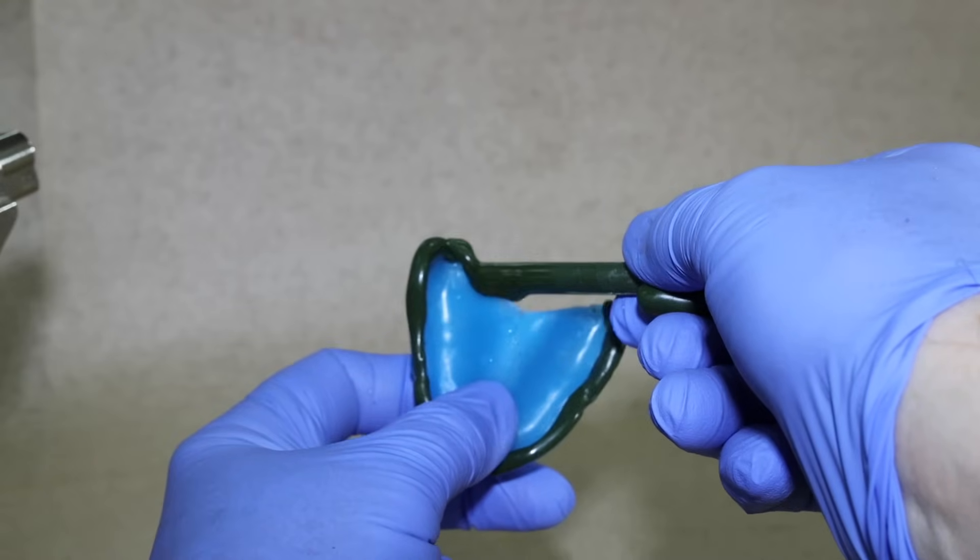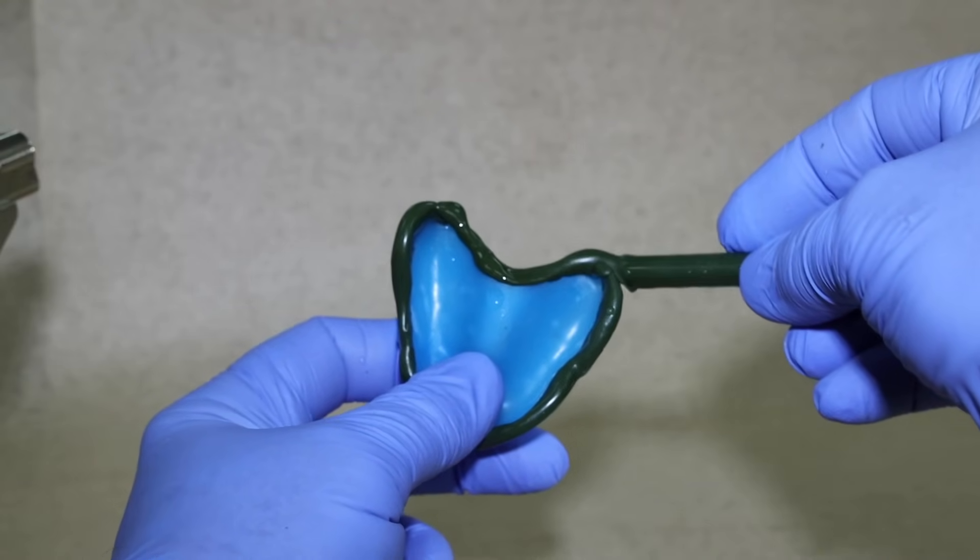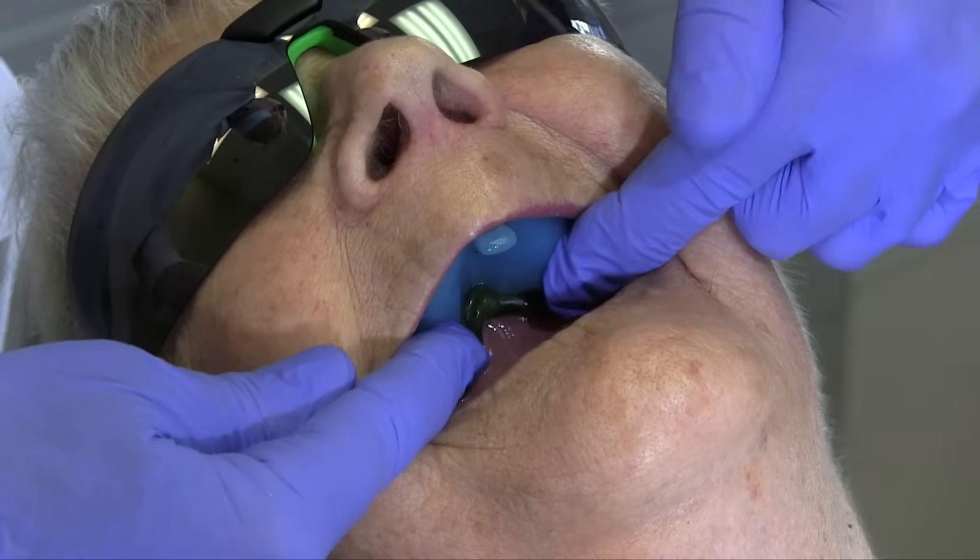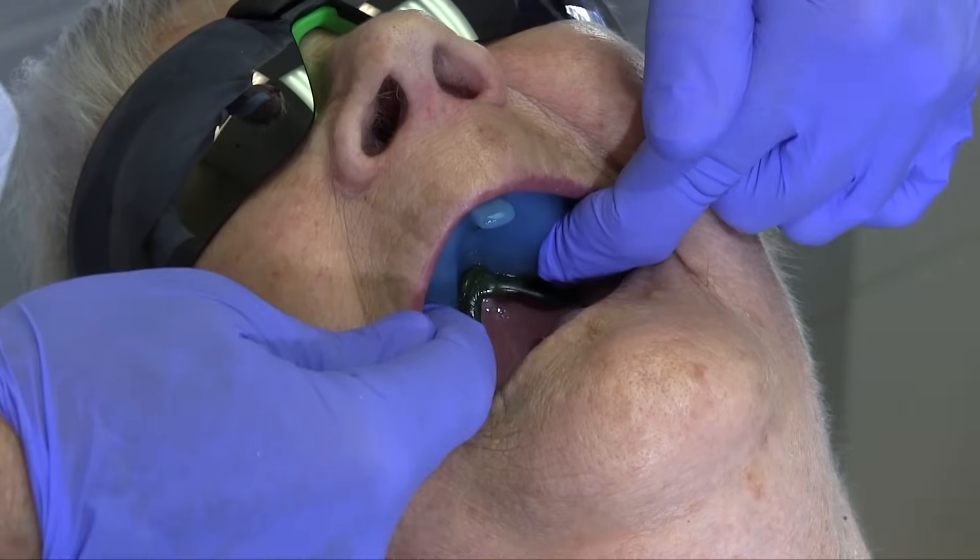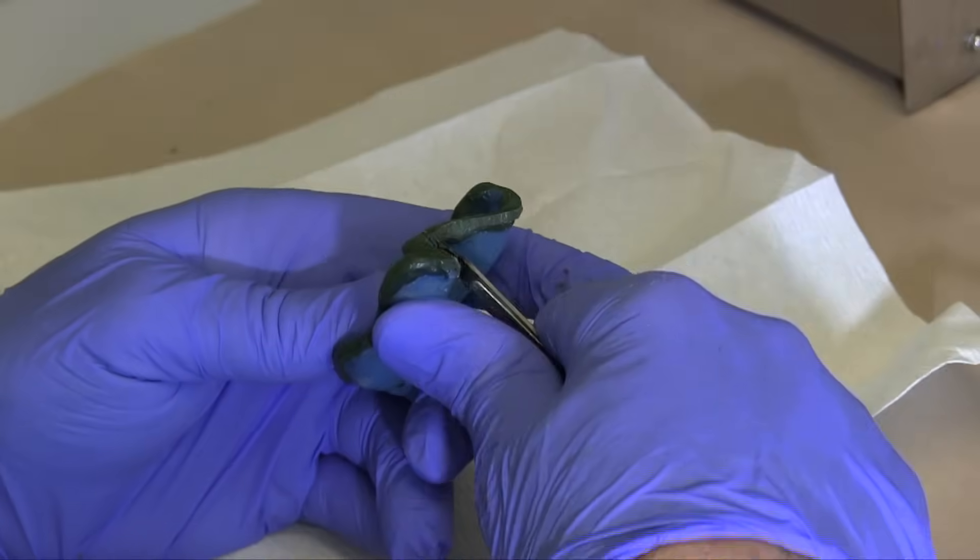At the posterior of the custom tray, compound is added on top of the tray rather than at its edge. After tempering, the tray is seated firmly in place. Excess will express posteriorly from the tray and need to be trimmed back to the vibrating line.